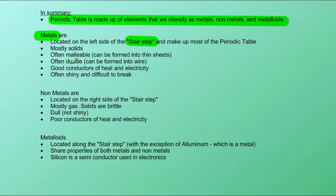Metals are mostly solid. They're often malleable, which means they can be formed into thin sheets. They're often ductile, which means they can be formed into wire. They are good conductors of heat and electricity. They're often shiny and difficult to break.